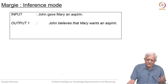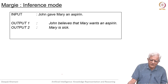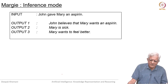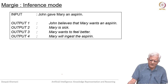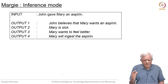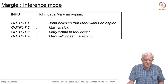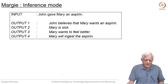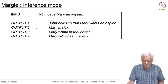John gave Mary an aspirin. Inferences: John believes that Mary wants an aspirin; Mary is sick; Mary wants to feel better; Mary will ingest an aspirin. All reasonable inferences, but you have to have background knowledge about the world to be able to make them — you should know what an aspirin is to start with.